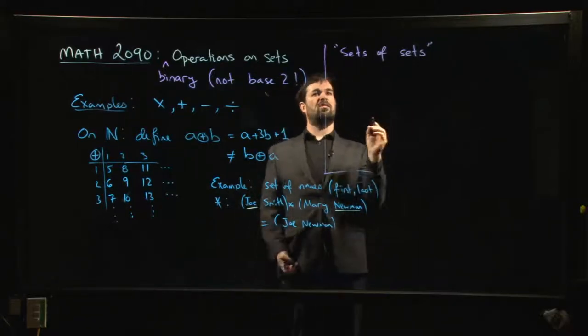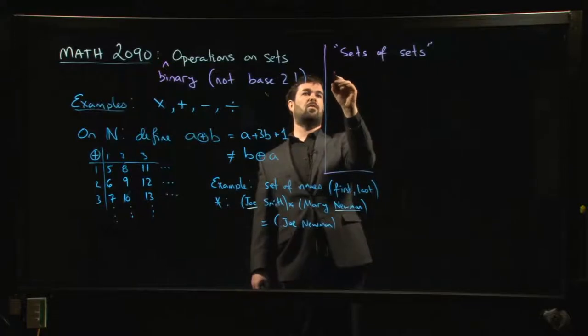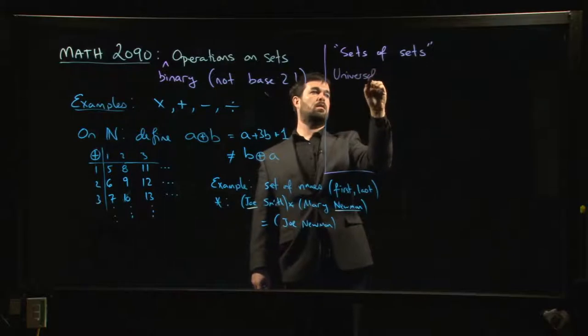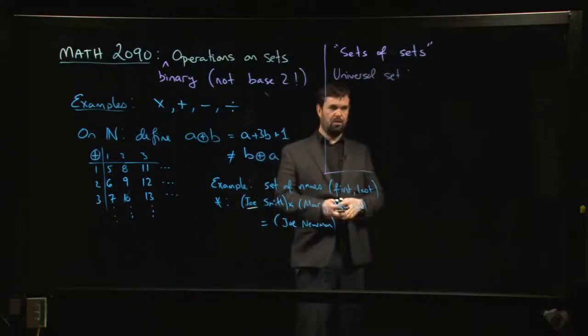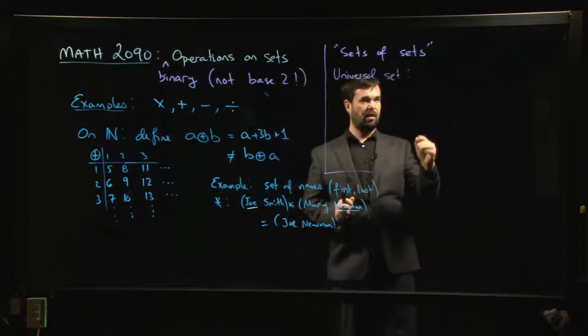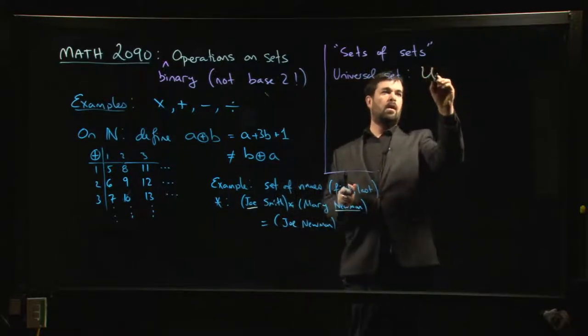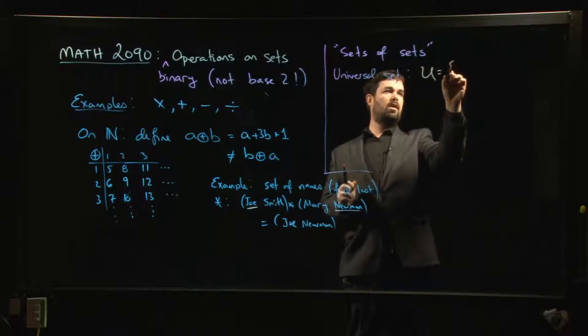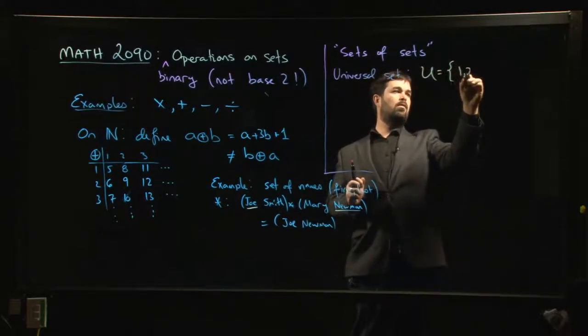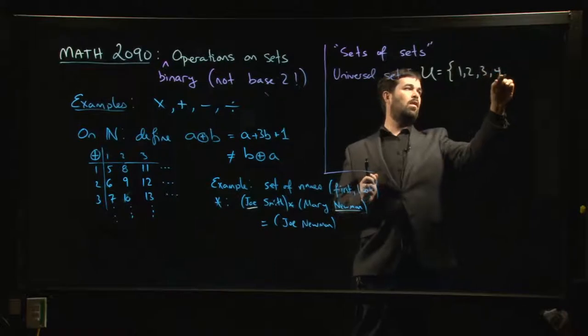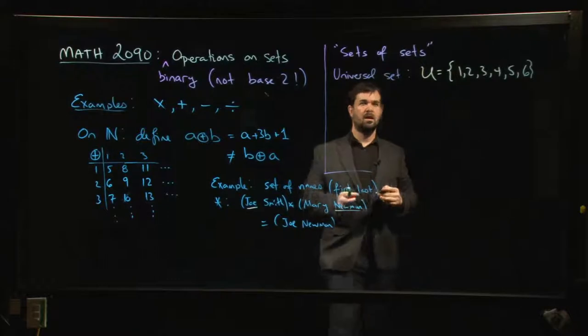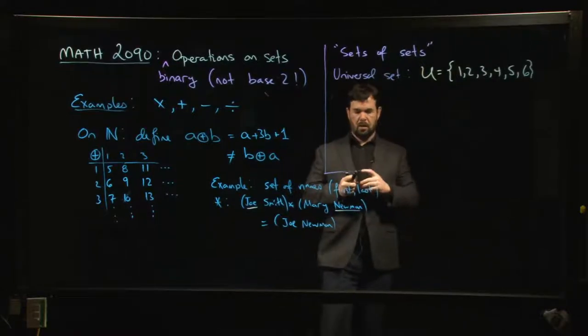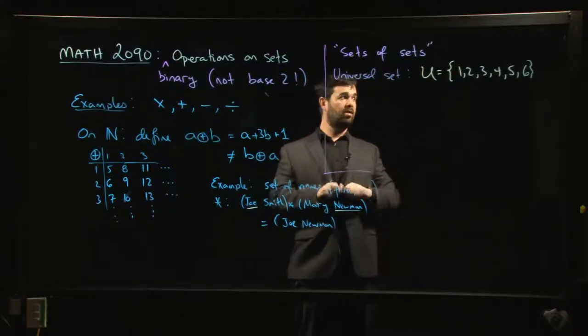You usually start with some universal set. Universal in the sense of this is your universe, it's all the things that you're going to consider. We're going to go with a simple example - it's going to be a set of numbers: one, two, three, four, five, six.